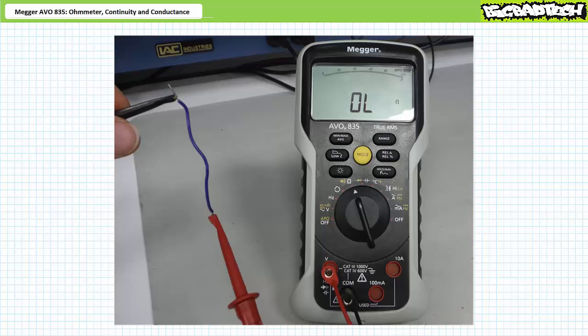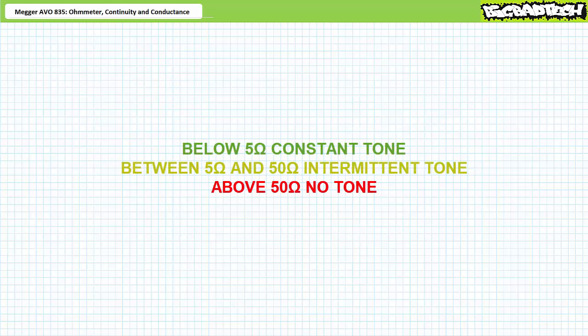Ohmmeter works for these types of checks. However, there's a better way to perform a continuity test. In addition to the numerical measurement of resistance, the AVO835 offers an audible continuity test. In summary, if there's a connection, it beeps. If there's no connection, it doesn't beep. On a more sophisticated level, the AVO835 emits a constant tone if the connection is below 5 ohms and an intermittent tone for connections between 5 and 50 ohms and no tone for connections above 50 ohms.